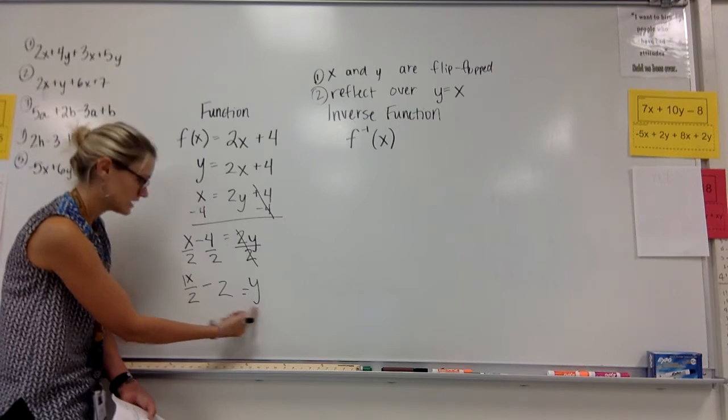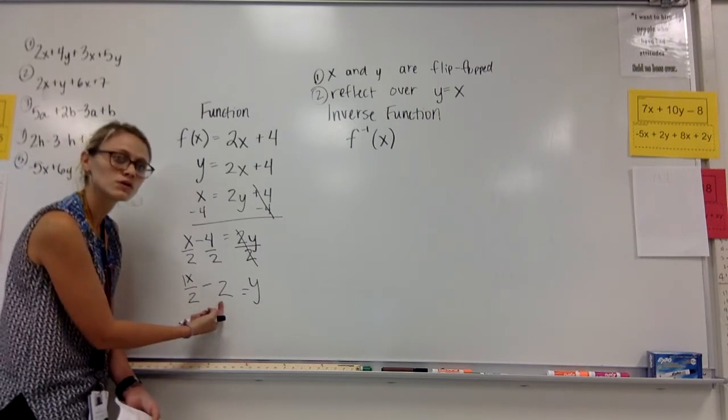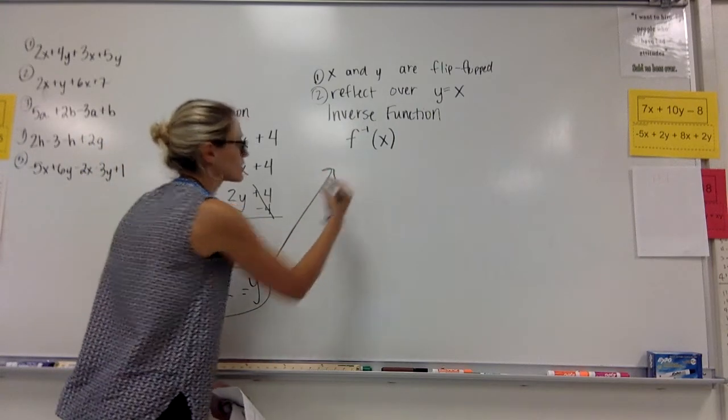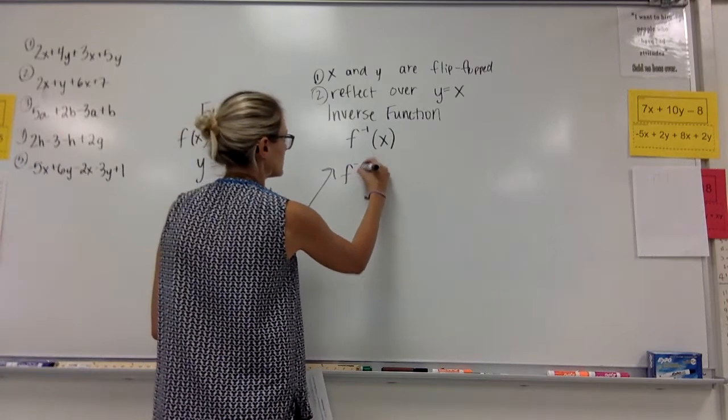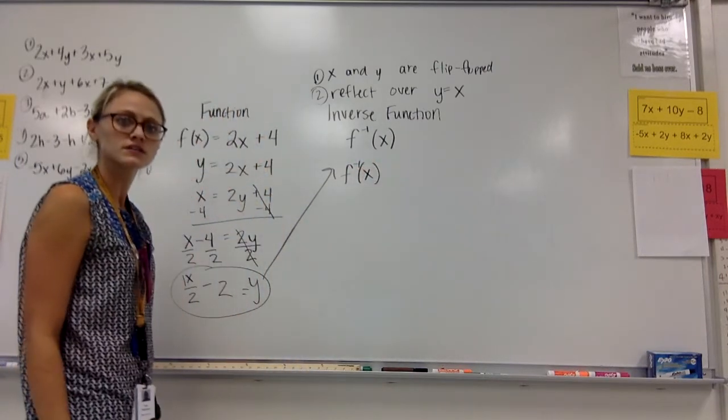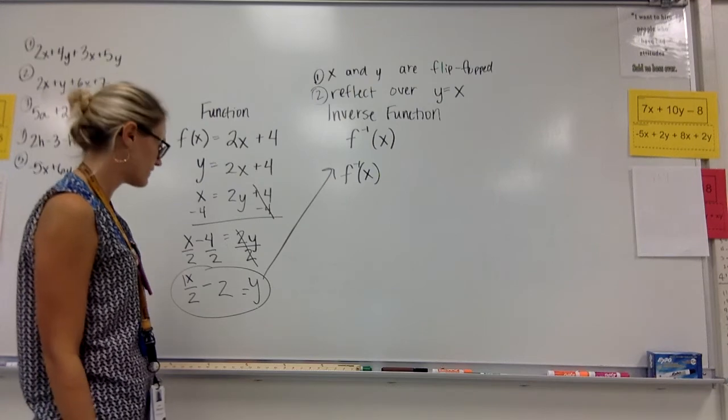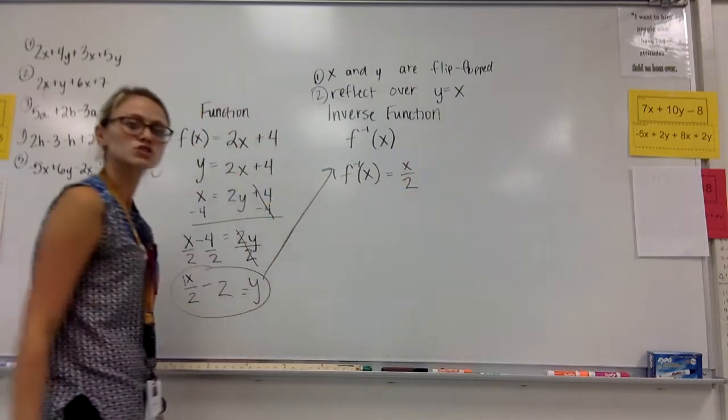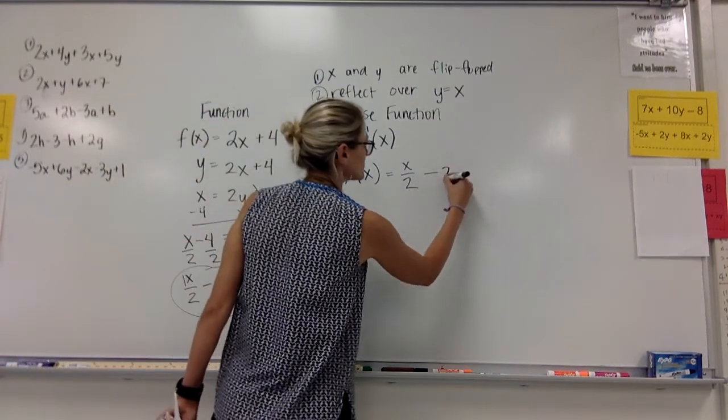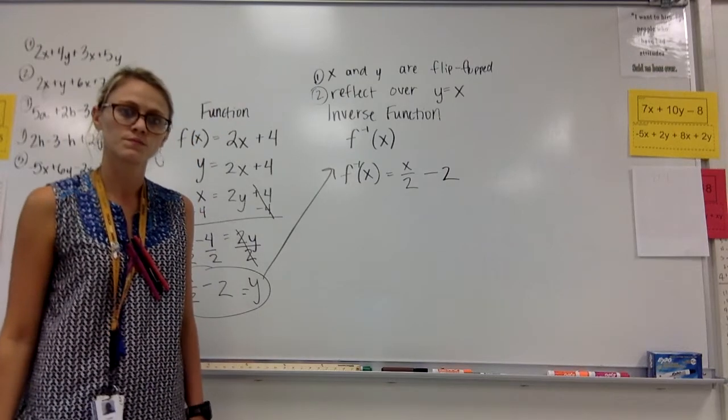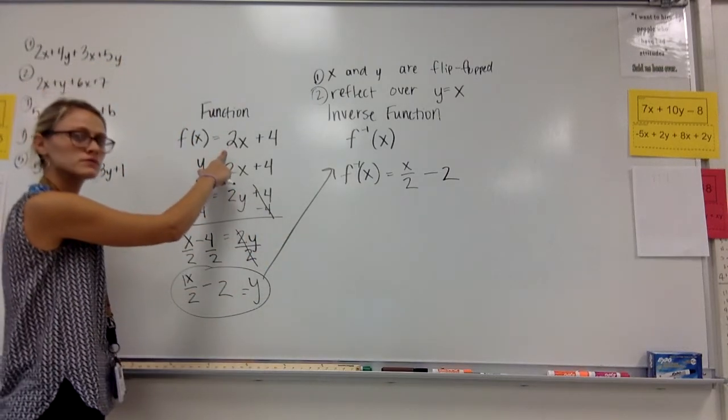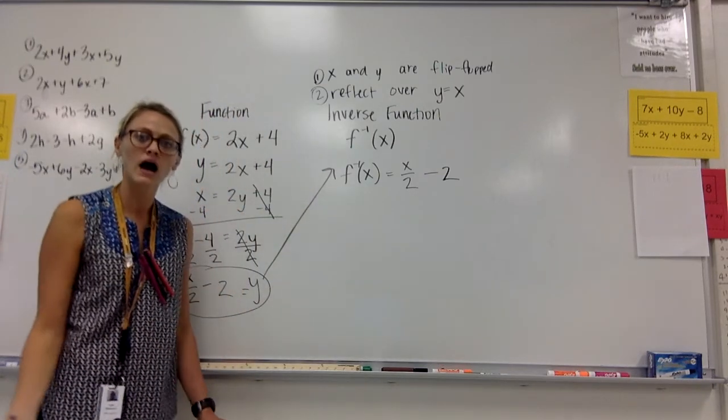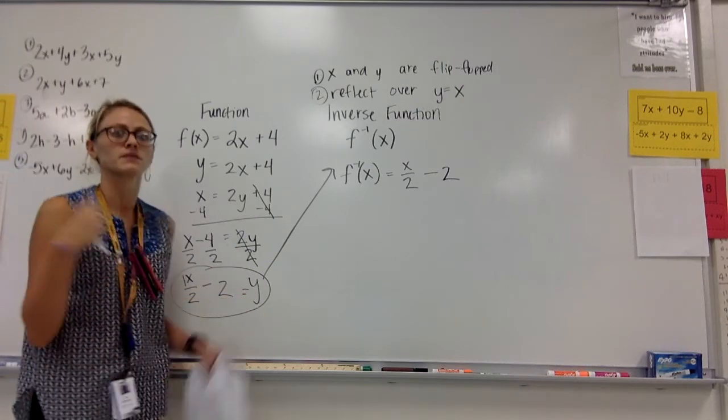So I now know that y equals x over 2 minus 2. So here is my inverse function, which I can now write as the inverse of my function, or f inverse of x is equal to x over 2 minus 2. So now I've got my original function, and I have my inverse function. I switched the x and the y, and then I solved for the y to have something that I can graph.